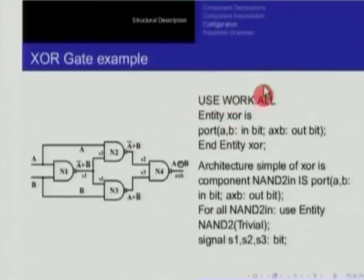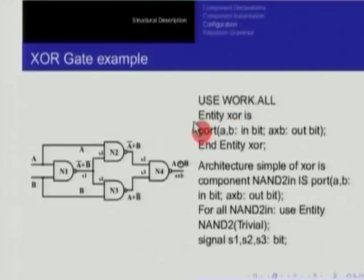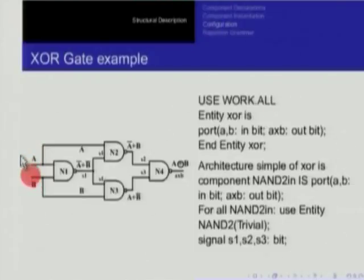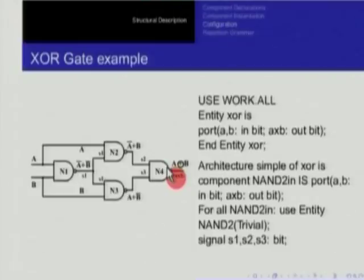We say 'use work.all', meaning use everything in the work library, and then 'entity XOR is port A, B' — these two ports. VHDL is case insensitive, so capital A, B are the same as lower case a, b. Ports A and B are inputs of type bit, and A_XOR_B is an output port also of type bit. This ends the entity.